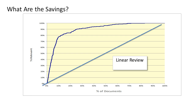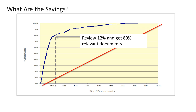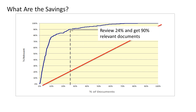As we find a relevant document, the line goes up. As we find not relevant, the line moves to the right. This chart shows you that the TAR process is working. Simply go up the line, and here we found 80% of the relevant documents, and yet we've only had to look at the first 12% of the stack. That's a great success. Farther down, we can actually get to 90%, and we've only reviewed a quarter of them.